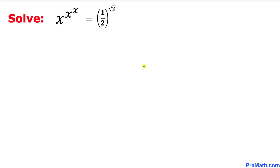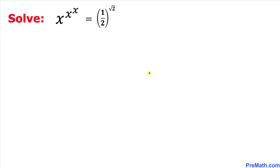Welcome to pre-math. In this video tutorial we are going to solve this given exponential equation. Here's our exponential equation: x to the power x, and then to the power x again, equals 1 over 2 to the power square root of 2. Let's go ahead and get started with the solution.